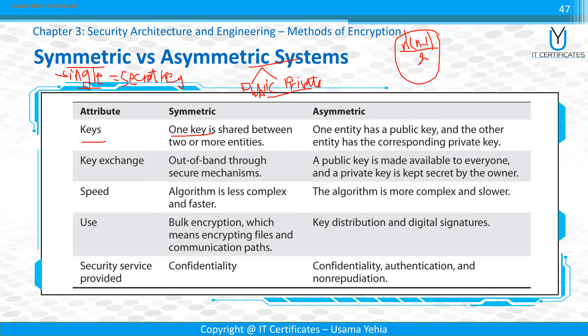Symmetric systems are very fast at encrypting and decrypting data - this is one of their most important advantages. Asymmetric is very complex and slow, requires a lot of resources like processor and memory. Regarding security services: confidentiality, authentication, and non-repudiation will be covered in more detail during this session.